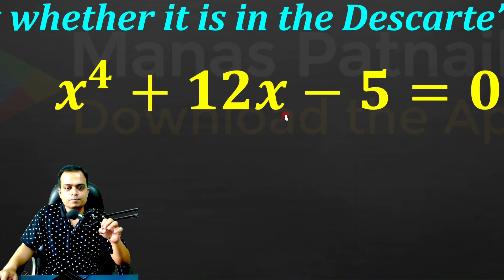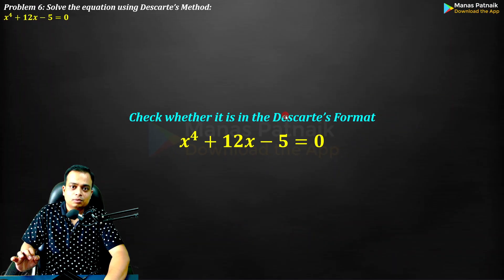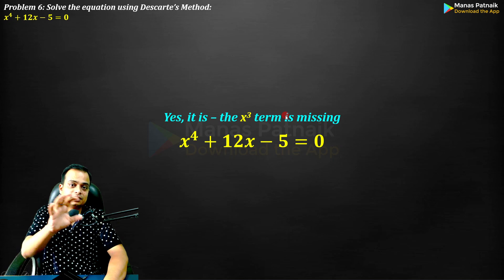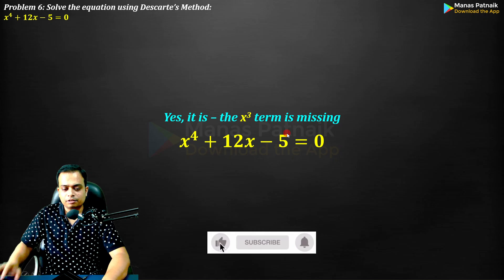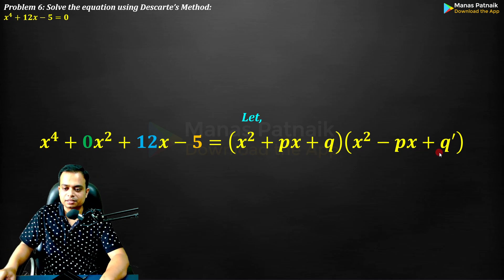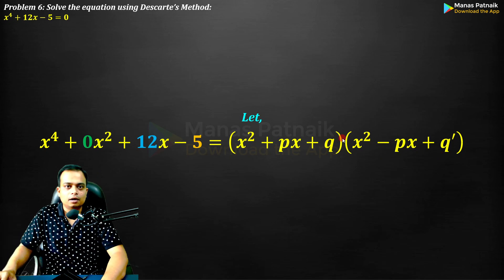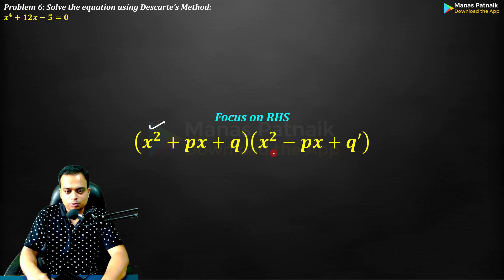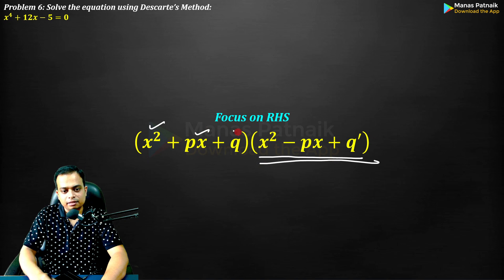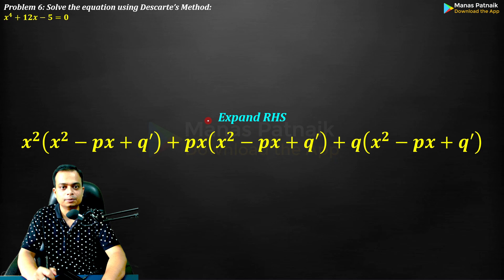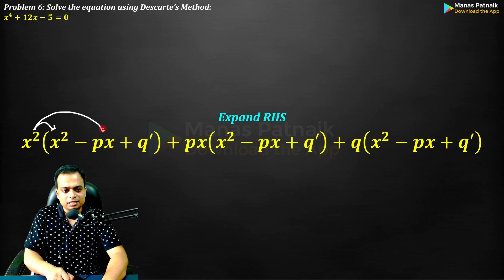Observe the given equation. Check whether the x³ term exists — no, it does not. So we can straight away apply Descartes' method. The first step is to equate the equation to the product of two quadratics: (x² + px + q)(x² − px + q'). Now focus on the RHS and multiply it out.